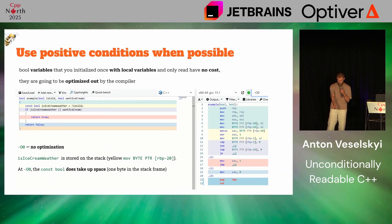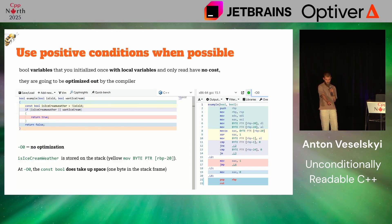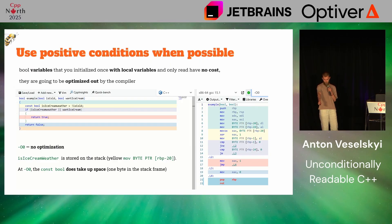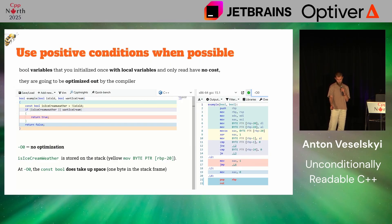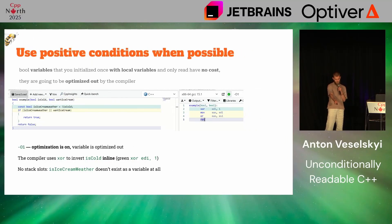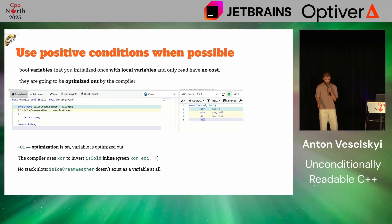I have some proof that it takes no space. Compiler Explorer sneak peek: with no optimization, 'is ice cream weather' takes space on the stack, there is a move, it's highlighted. With some optimization, it's gone.